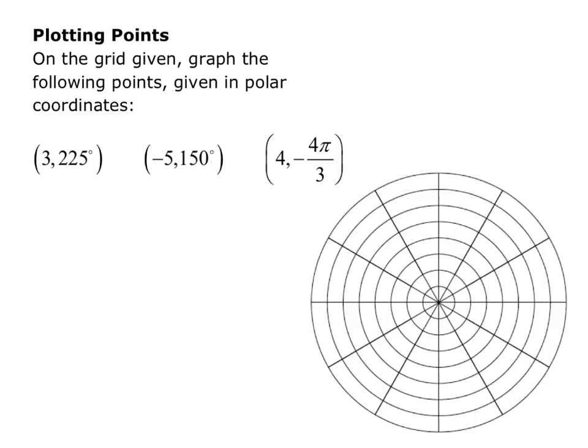The polar grid looks like a bunch of circles expanding out from the origin, and we have rays marking off our angles at 30 degrees, 60 degrees, 90 degrees, and so on. So let's do this first point, (3, 225°).